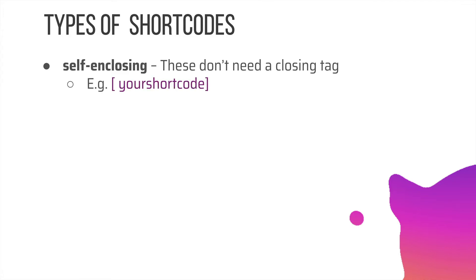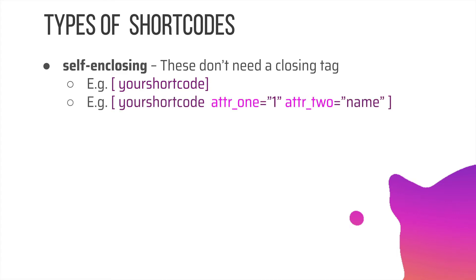Here's an example of a shortcode: the name of the shortcode is wrapped inside square brackets. You can also pass attributes — you can pass multiple attributes as key-value pairs, such as attribute-one equals a value, and so on.